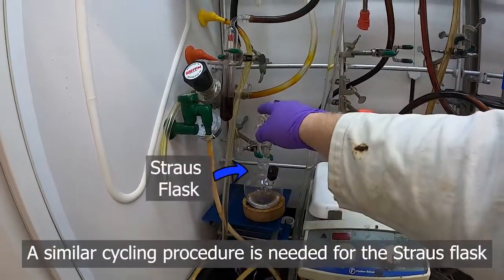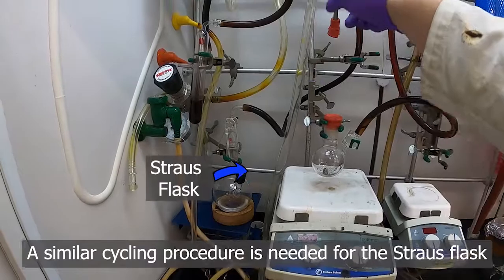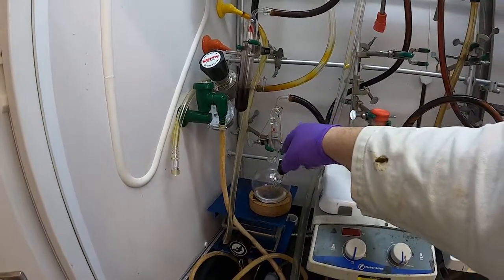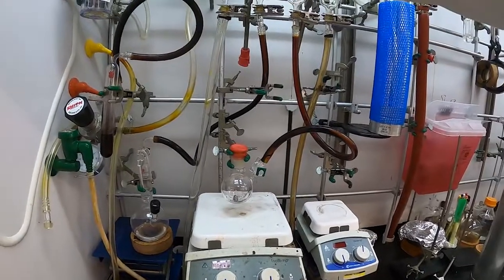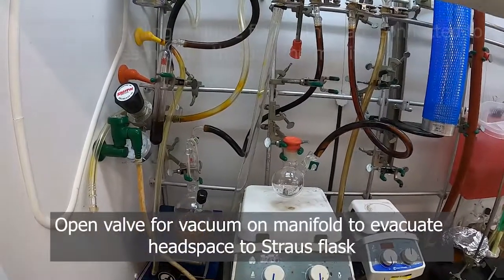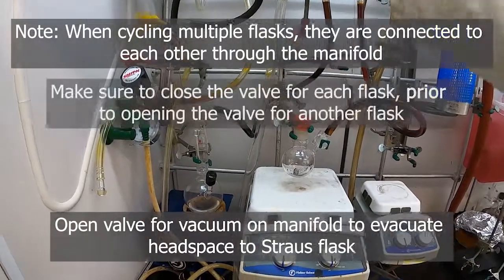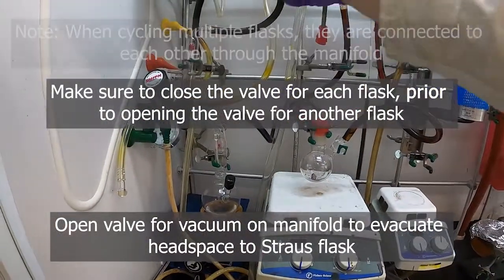We're going to do the same thing for the headspace. So the tube and this top area of our storage, our Strauss flask here. So we'll just open that vacuum. Since there's no solid in there, we don't have to worry about whether or not the tube is open to start. So we'll just put that vacuum right up.